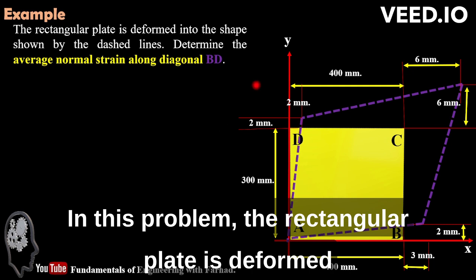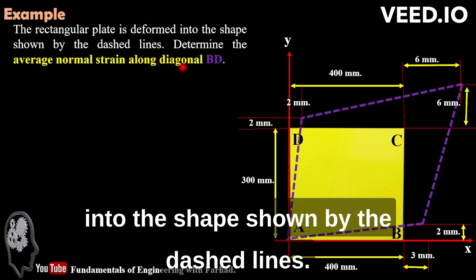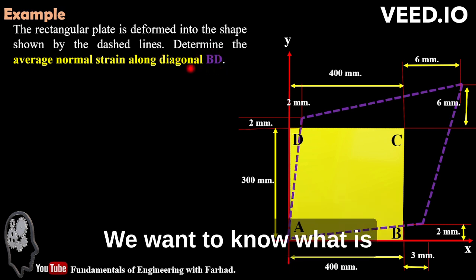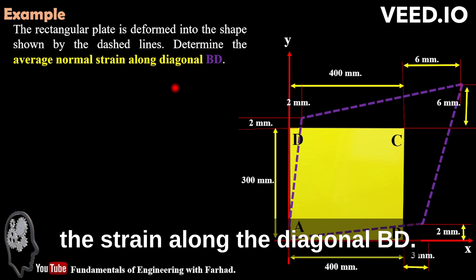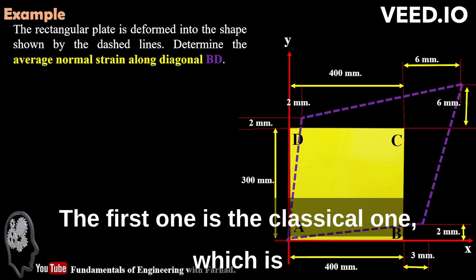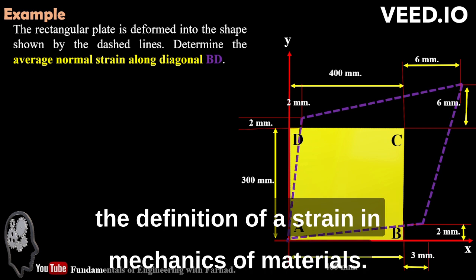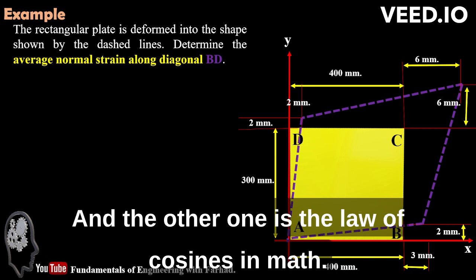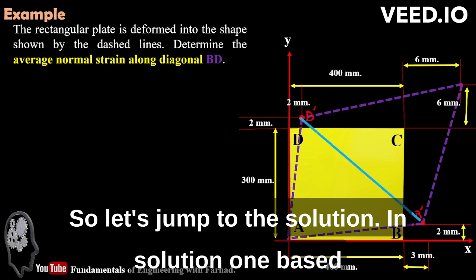In this problem, the rectangular plate is deformed into the shape shown by the dashed lines. We want to know what is the strain along the diagonal BD. We can solve this problem based on two approaches. The first one is the classical one, which is the definition of strain in Mechanics of Materials. The other one is the law of cosines in math. Let's jump to the solution.